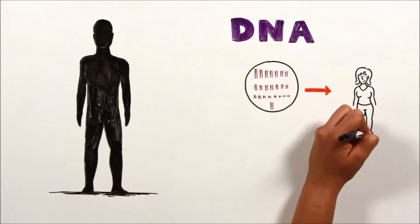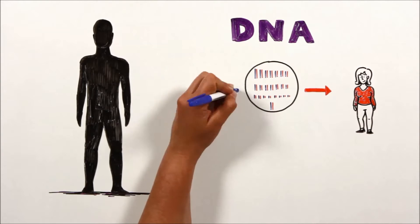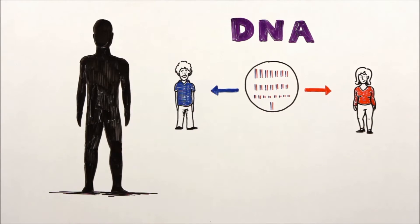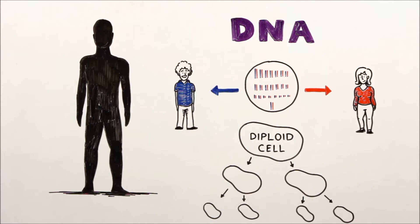One set of 23 chromosomes is inherited from the mother, and the other set is inherited from the father. Together, cells with two sets of chromosomes are called diploid cells, and they can divide to generate more diploid cells.